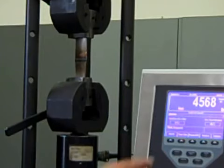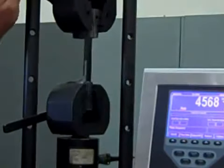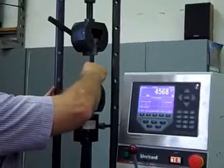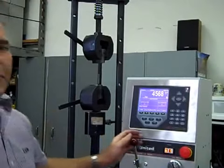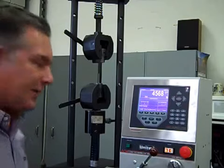The peak load is obtained, 4568 pounds. The specimen failed. The machine is put in neutral. The broken coupon is removed. The machine is returned back to home position.